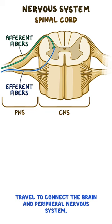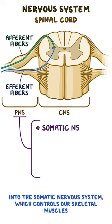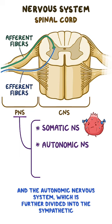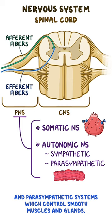The peripheral nervous system can be divided into the somatic nervous system, which controls our skeletal muscles, and the autonomic nervous system, which is further divided into the sympathetic and parasympathetic systems, which control smooth muscles and glands.